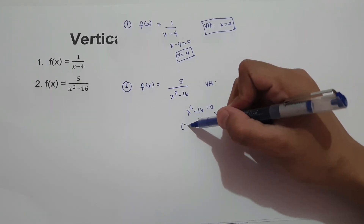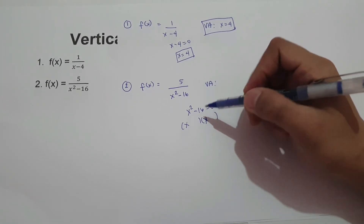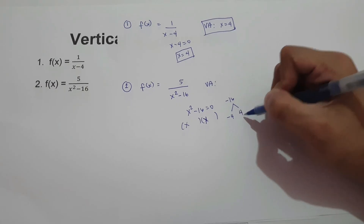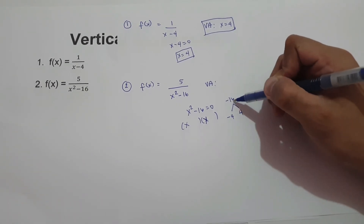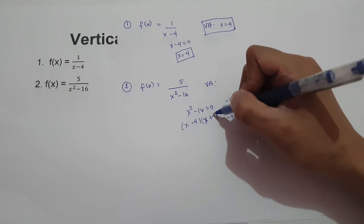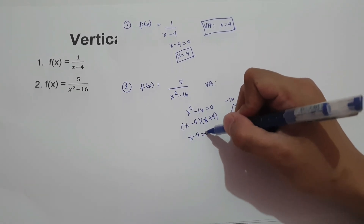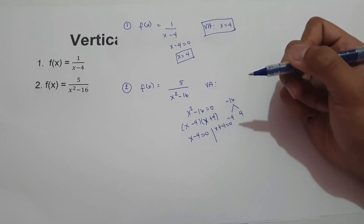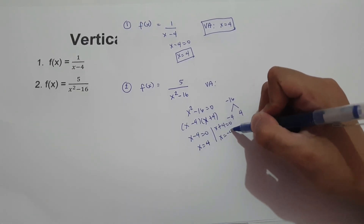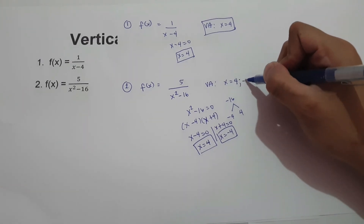The factors of x squared are x and x. For the two numbers: if you multiply you get negative 16, and if you add you get zero — so that is negative 4 and positive 4. Negative 4 times 4 is negative 16, and negative 4 plus 4 is zero. Therefore, the factors are x minus 4 and x plus 4. Setting each equal to zero gives x equals positive 4 and x equals negative 4. So our vertical asymptotes are x equals 4 and x equals negative 4.